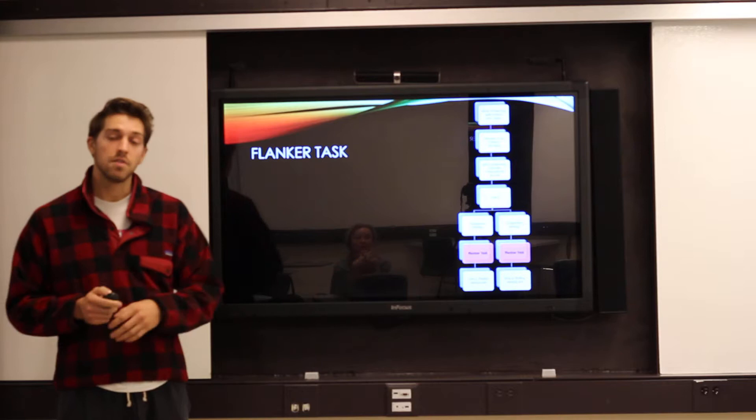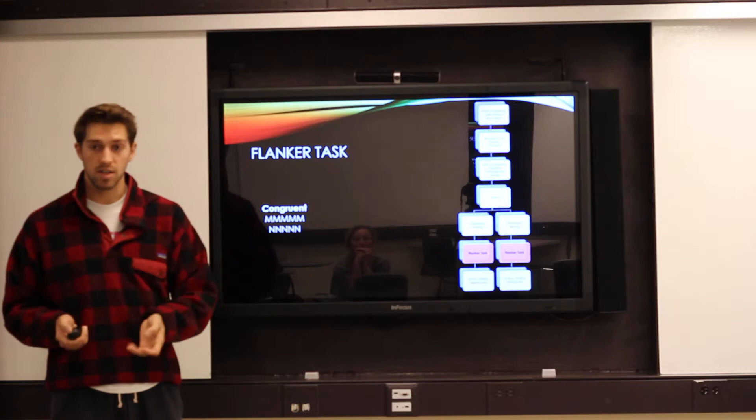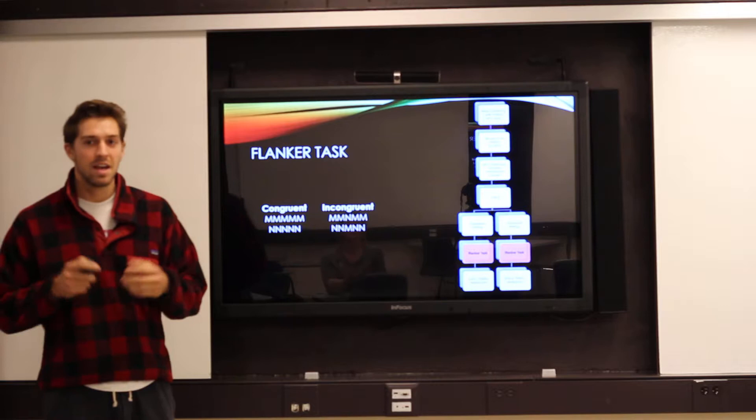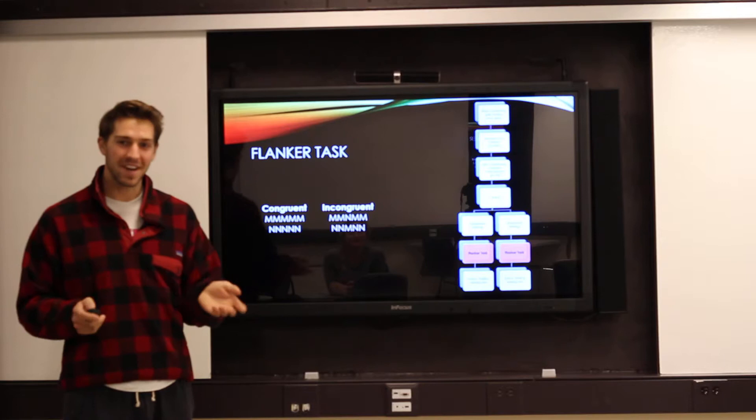The flanker task has individuals respond using a keyboard to a series of congruent and incongruent letter combinations. In this example, if the middle letter was an M, the participant might be asked to respond with their left hand. If the middle letter was an N, they might be asked to respond with their right hand. I did a version of the flanker task and let me tell you it's really perfect if you want to produce a lot of errors.